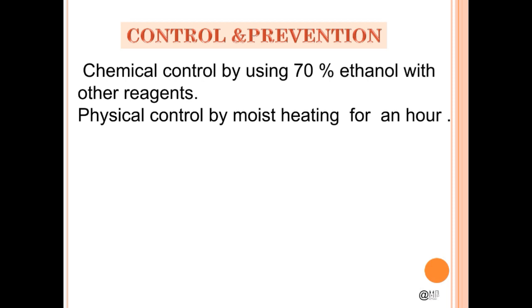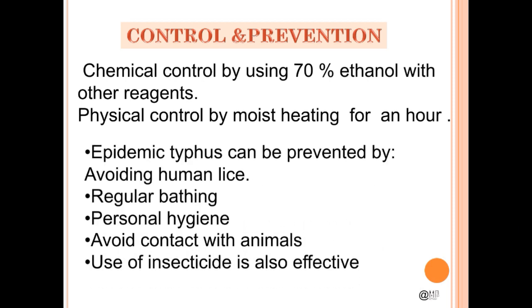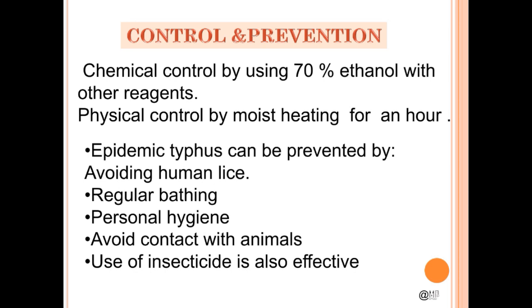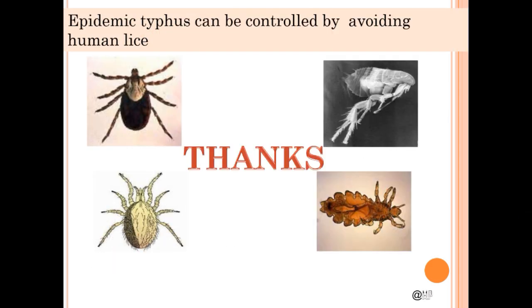Control and prevention: chemical control by using 70% ethanol with other reagents, and physical control by moist heating for an hour. Epidemic typhus can be prevented by avoiding human lice, regular bathing, personal hygiene, avoiding contact with animals, and use of insecticide is also effective. Epidemic typhus can be controlled by avoiding human lice. Thanks.